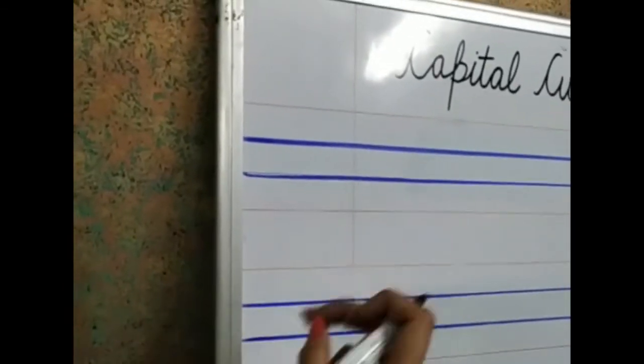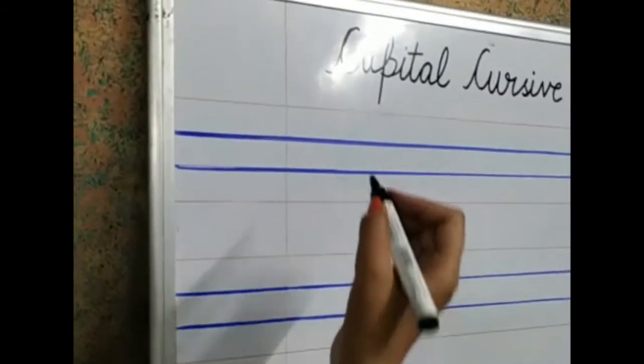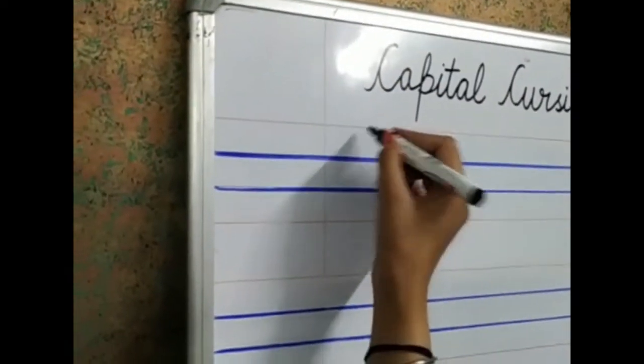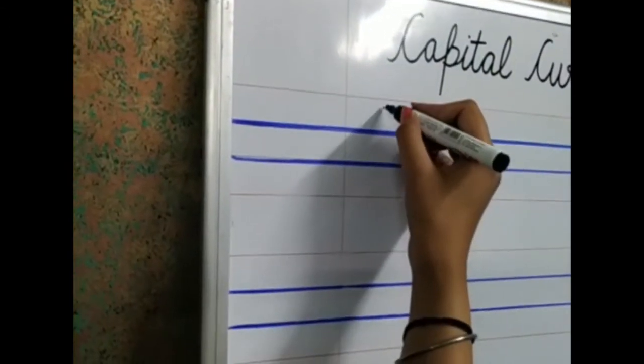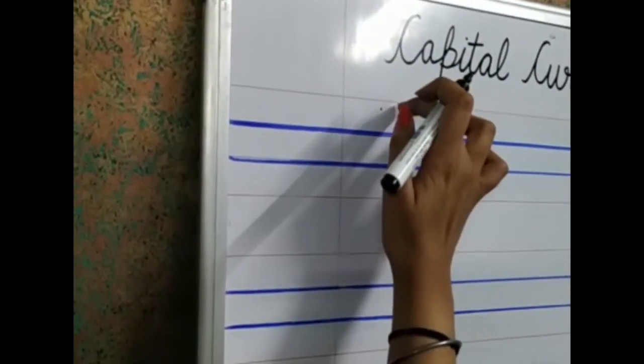So here also we have it in the same way. So, below the red line, let's put a small dot. Let's put a small dot. Alright.